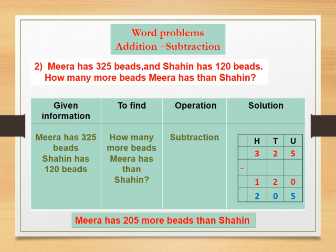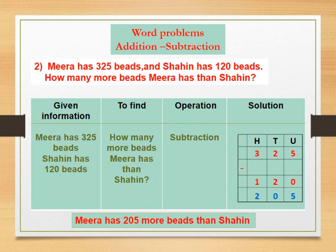Given information: Meera has 325 beads and Shahin has 120 beads. To find: how many more beads Meera has than Shahin — Meera जवळ Shahin पेक्षा किती जास्त मणी आहेत ते काढायचे आहे. Operation: here we write subtraction, कारण इथे त्यांनी असे विचारले आहे की Meera जवळ Shahin पेक्षा किती जास्त मणी आहेत — इथे आपण वजाबाकी ही क्रिया लिहिणार आहोत.